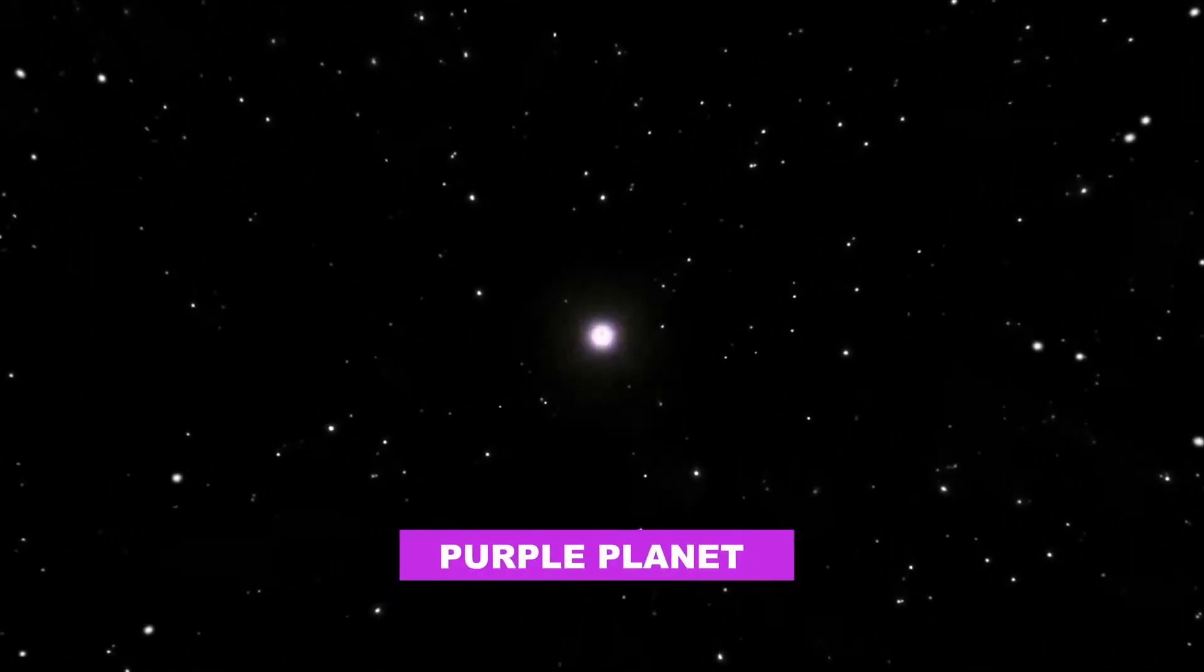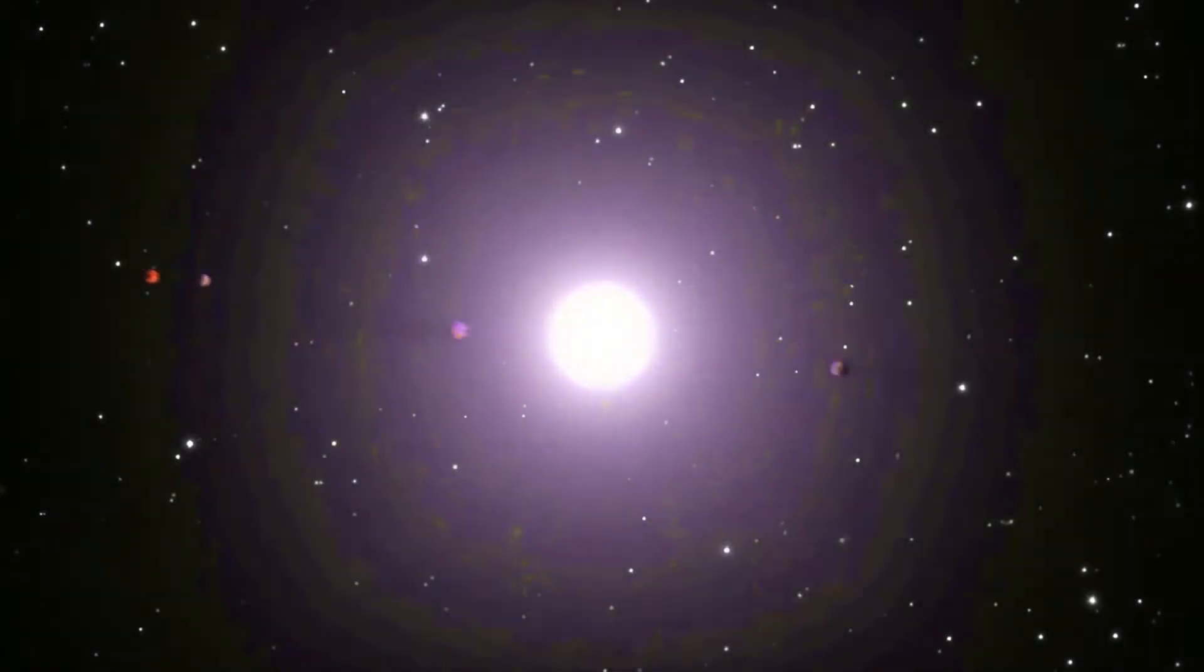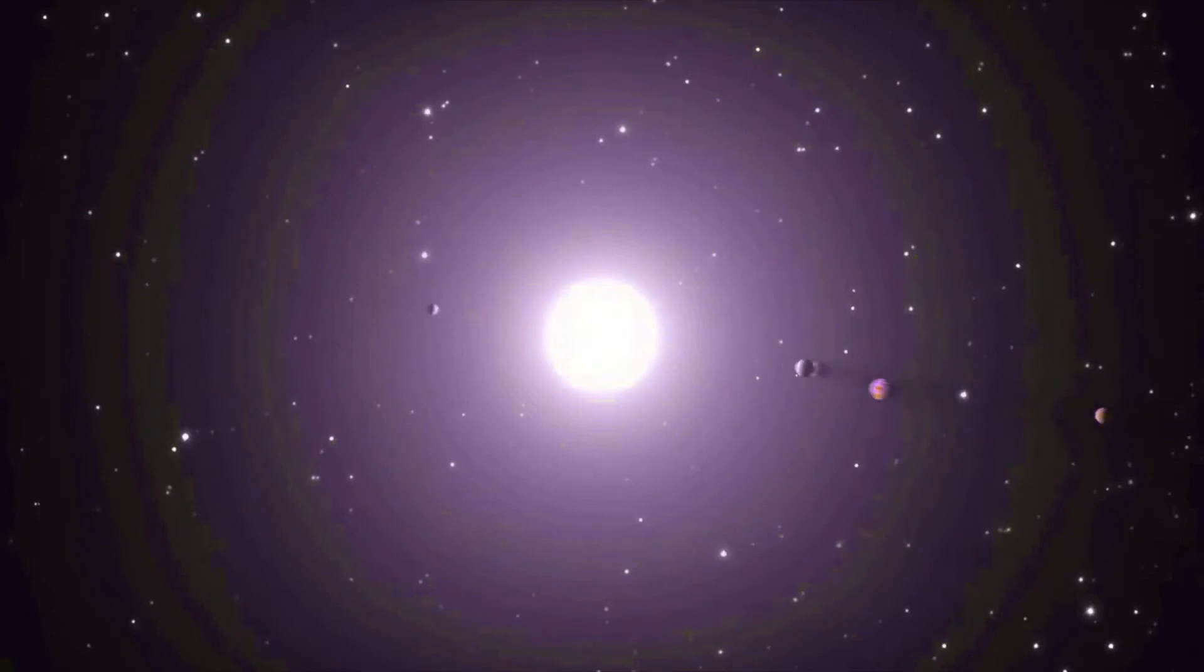Often called the purple planet, Kepler-11e is the fourth of six planets around the planetary system Kepler-11 discovered by NASA spacecraft named Kepler.